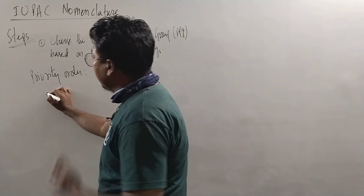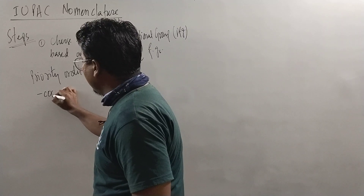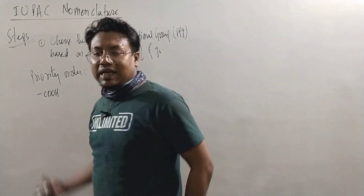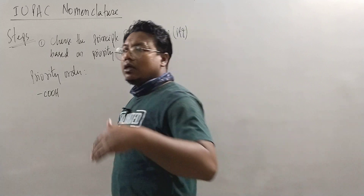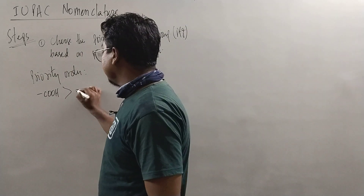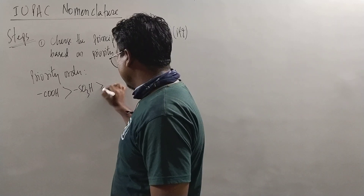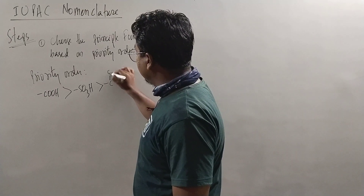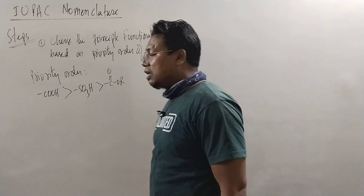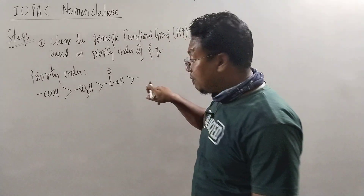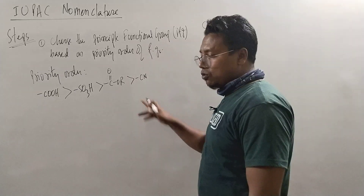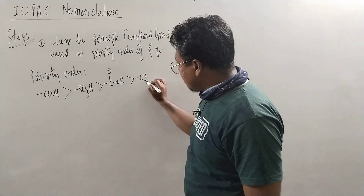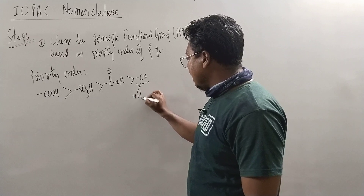If you have a priority order, you can use COO. This is a priority ordering: CO2O is a carboxylic acid. The CO2O is a sulfonic acid. The CO2O has a carboxyl acid. Finally, CEN is a CO2O — its a nitrile.